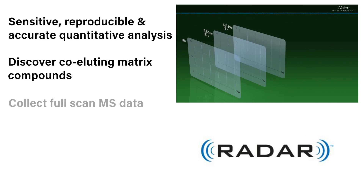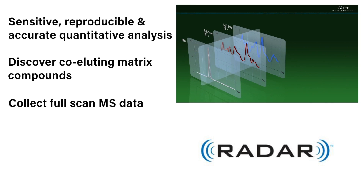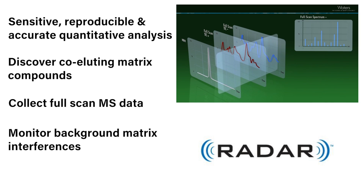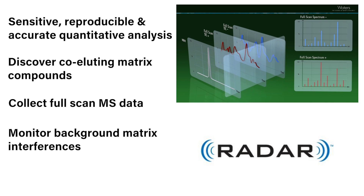Radar also enables analysts to collect full-scan MS data for analytes that may be of interest but are not included in targeted MRM screening methods, and to monitor the background matrix for interferences to reduce matrix effects. This will enable faster method development.